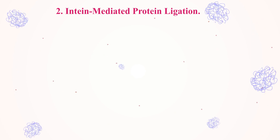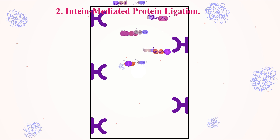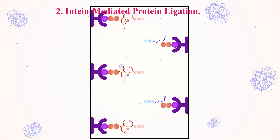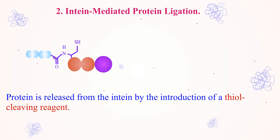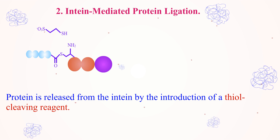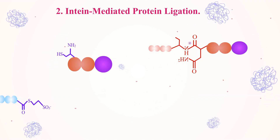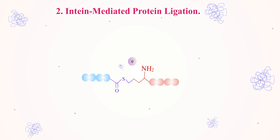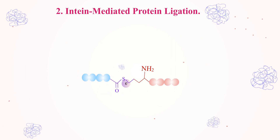The second application of protein splicing is intein-mediated protein ligation. In this method, the target protein is fused to the N-terminus of the intein and the C-terminus of the intein is linked to an affinity tag. The protein is then purified on an affinity column and released from the intein by the introduction of a thiol-cleaving reagent, leaving a peptide with a C-terminal alpha-thioester. At this stage, a peptide with an N-terminal cysteine is introduced and its thiol side chain attacks the alpha-thioester functionality. The resulting linked-thioester intermediate spontaneously rearranges to form a native peptide bond.